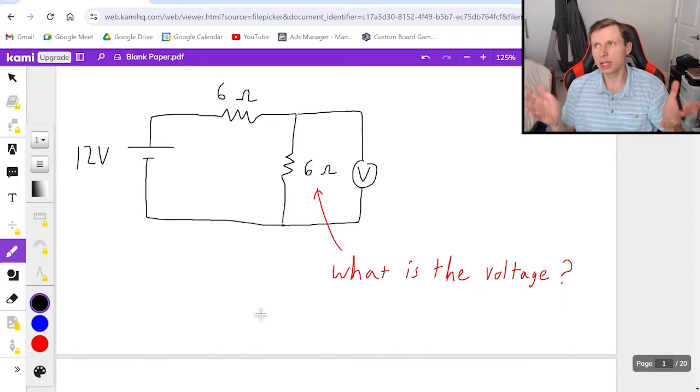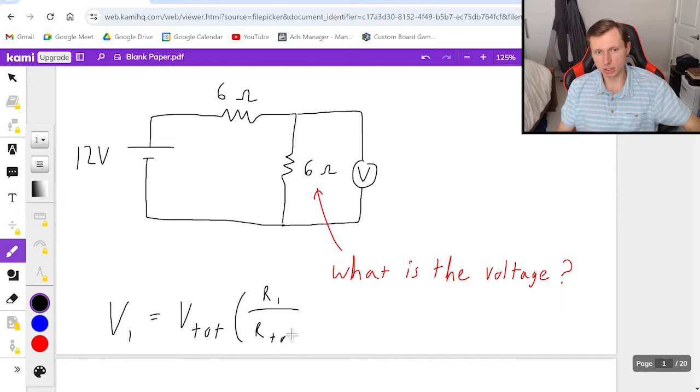But another way I could ask this is what is the voltage on this resistor? And so there's many ways that you can find this voltage on the six ohm resistor. In this problem I would recommend using voltage division which only works when the resistors are all in series. And what's going to look like is V1, where V1 is the voltage on the six ohm that I want, equals V total times resistor one over resistor total.